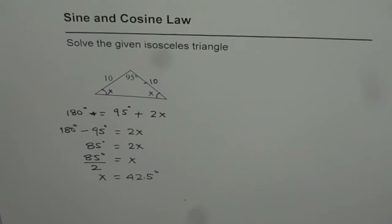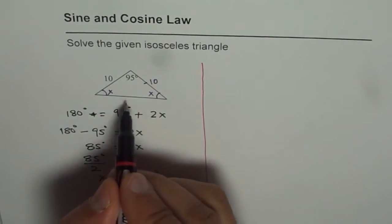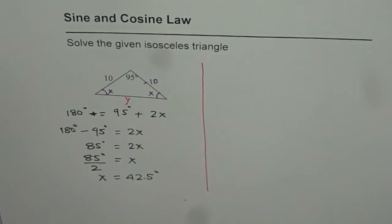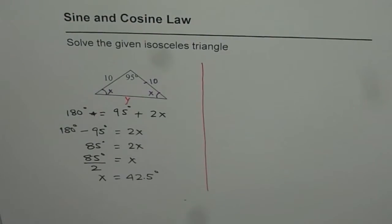So both these angles are 42.5 degrees. We can easily find the angle since we know it is an isosceles triangle. Now we have to find the third side. Let us say this side is y for us. How are you going to find this side? Will you use sine law or cosine law? That is a big question.